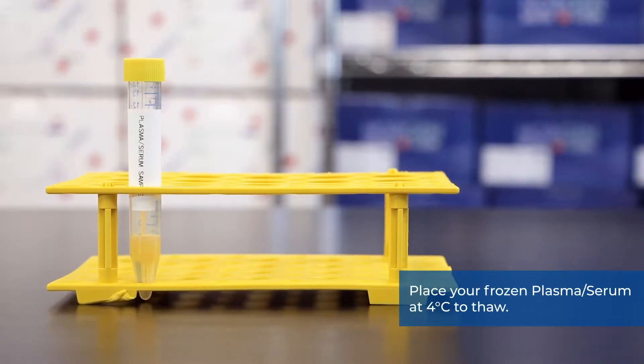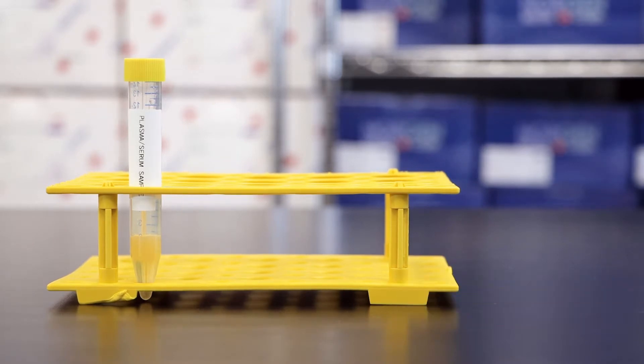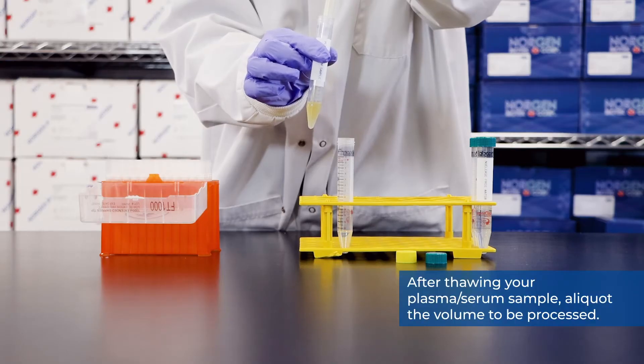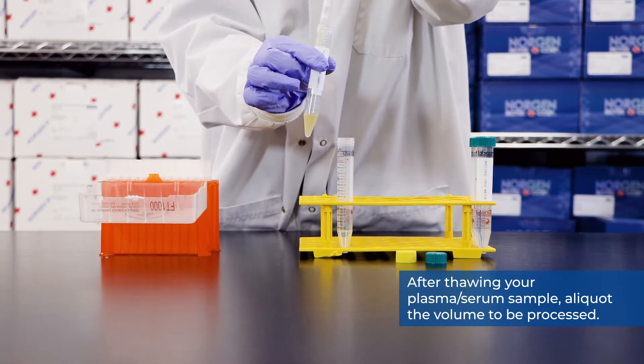To prepare your plasma serum sample, place your frozen plasma serum at 4 degrees Celsius to thaw. After thawing your plasma serum sample, aliquot the volume to be processed.